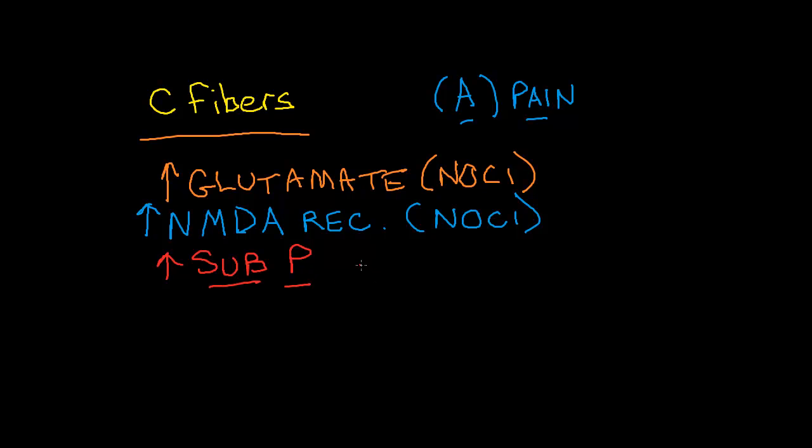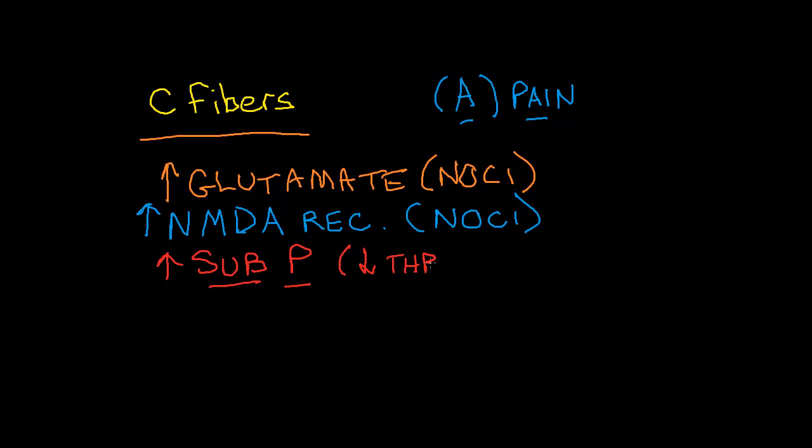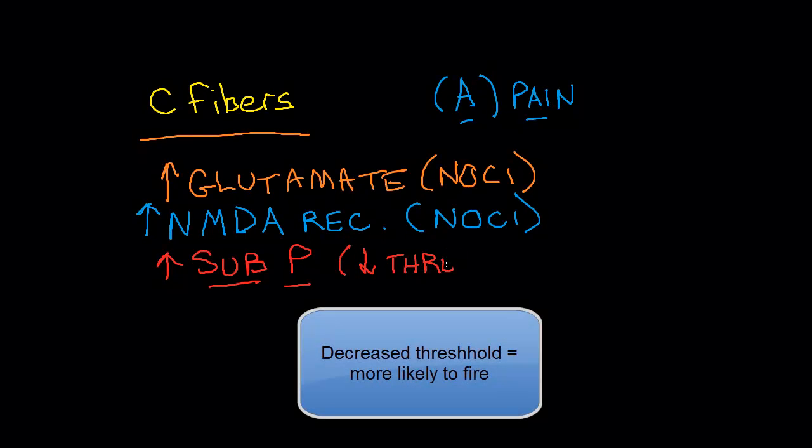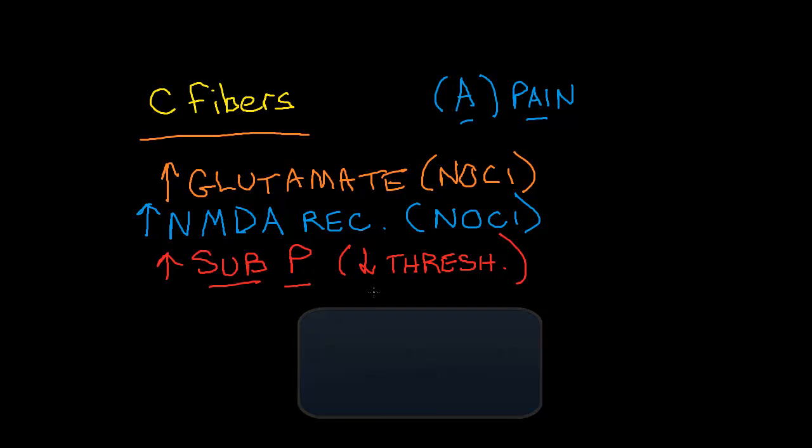So what's happening now is the nociceptive processing that live in the periphery are more likely to fire. The way I remember this is if I was walking through a door, which can also be called a threshold, and it was low, I could get through it really easily. So these things are firing really easily.